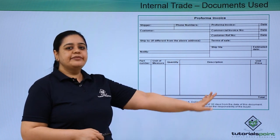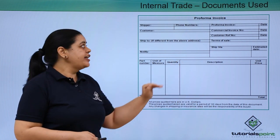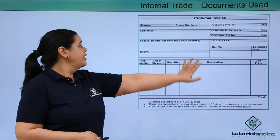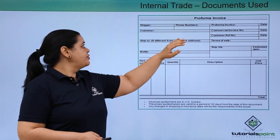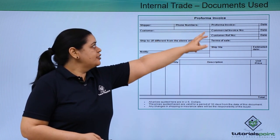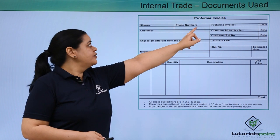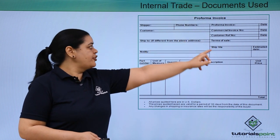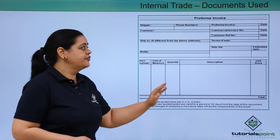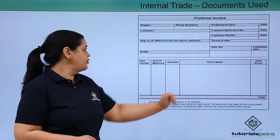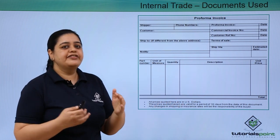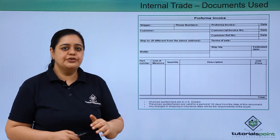Here is a simple performa invoice. You can see we have the name of the shipper and the customer. It is already written that it is a performa invoice, and we have the details about the goods which can be written out. This is the way this invoice looks.